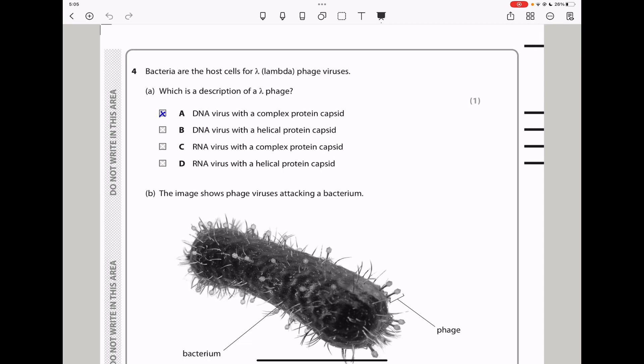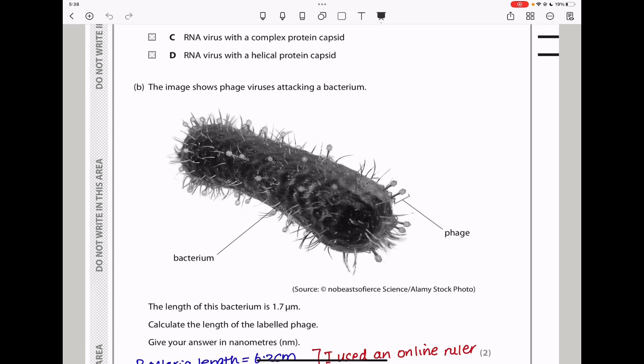Let's continue to question four. Bacteria are the host of the lambda phage viruses. Which is a description of a lambda phage? A lambda phage is, of course, a DNA virus, and it has a complex protein capsid. So this should be the answer.